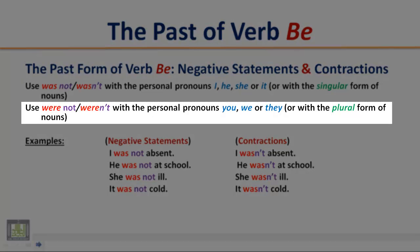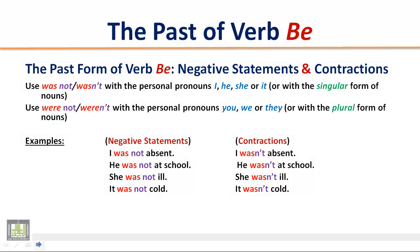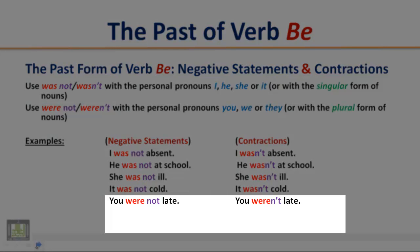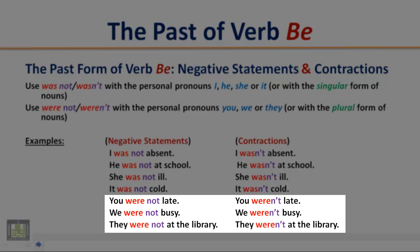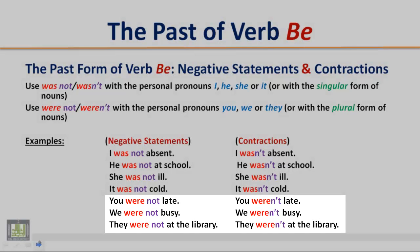Use 'were not' or 'weren't' with the personal pronouns you, we, or they, or with the plural form of nouns. Examples: You were not late / You weren't late. We were not busy / We weren't busy. They were not at the library / They weren't at the library.